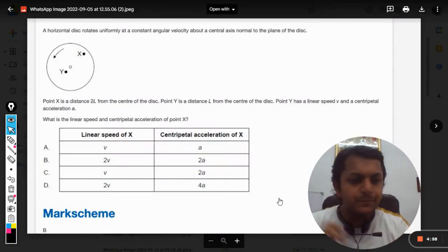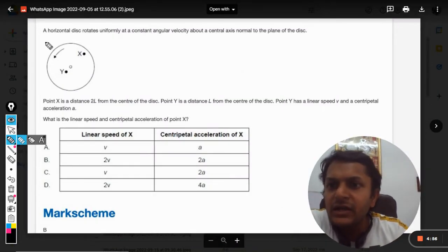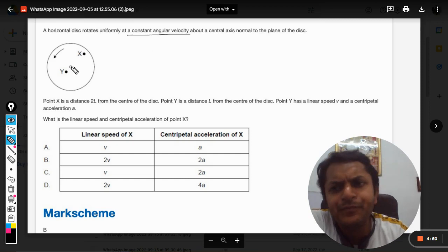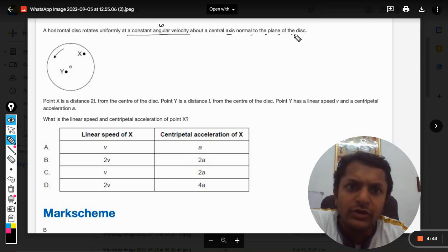Okay dear students, let's do this question. The statement is: a horizontal disc rotates uniformly at a constant angular velocity, so we can say it's omega about a central axis normal to the plane of the disc.